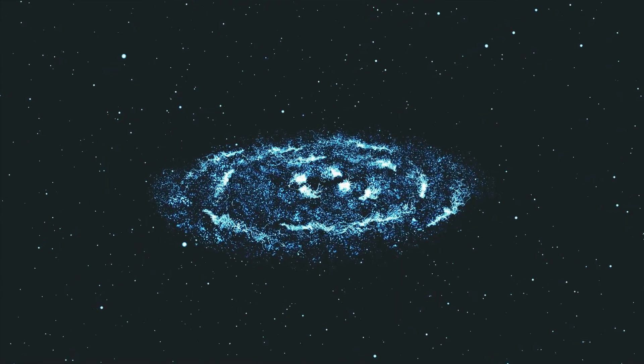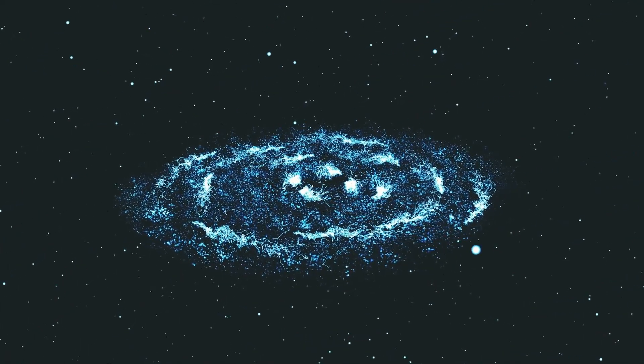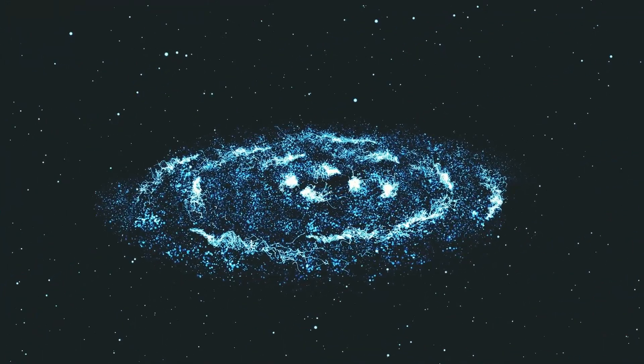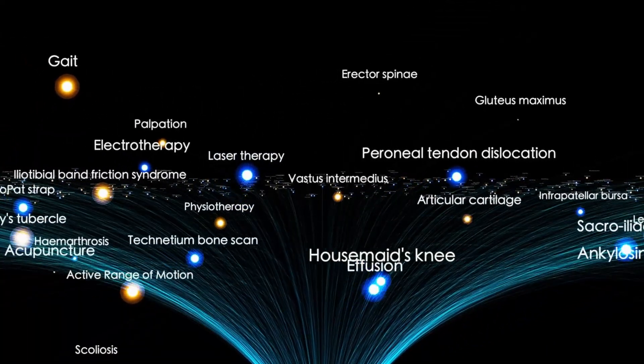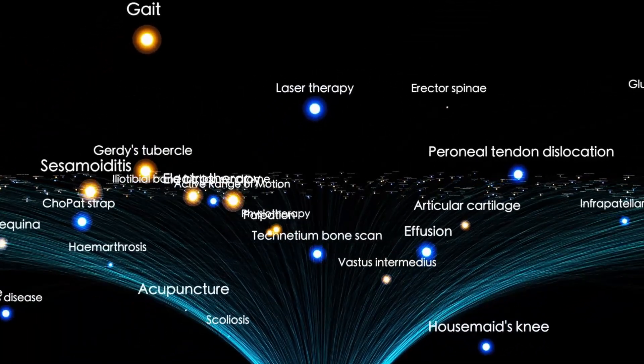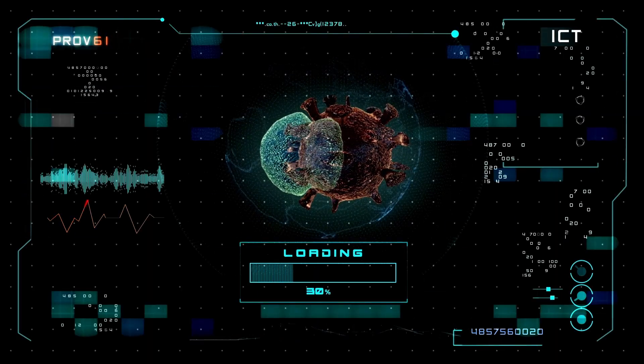3I Atlas was discovered on July 1st, 2025, by the Atlas Survey in Chile. Within weeks, rumors began circulating about an unscheduled Falcon 9 mission. No official announcement, no press release, just whispers in the space community about a rocket heading towards something moving faster than anything we've ever tried to catch.